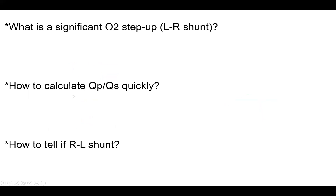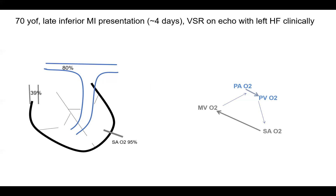The second question: how to calculate the QPQS shunt ratio quickly. You calculate it using three numbers. Take the arterial sat — normally 95 to 100%, here 95% — minus the lower number (SVC sat), divided by 95 minus the higher number (PA sat). So it's 95 minus 39, divided by 95 minus 80. The ratio comes out as 3.7, which is over 1.5 — moderate; over 2 is a large left-to-right shunt. QPQS in this case is very easy to calculate.